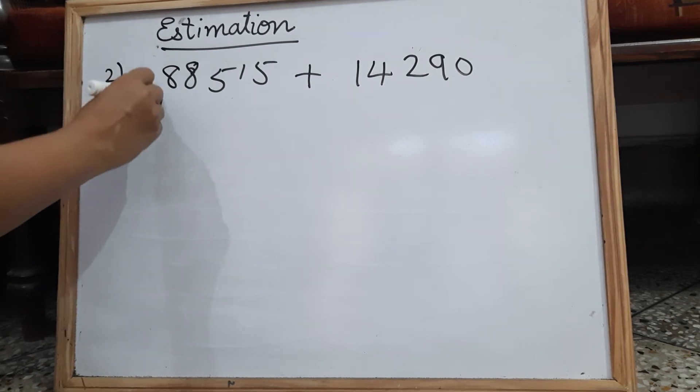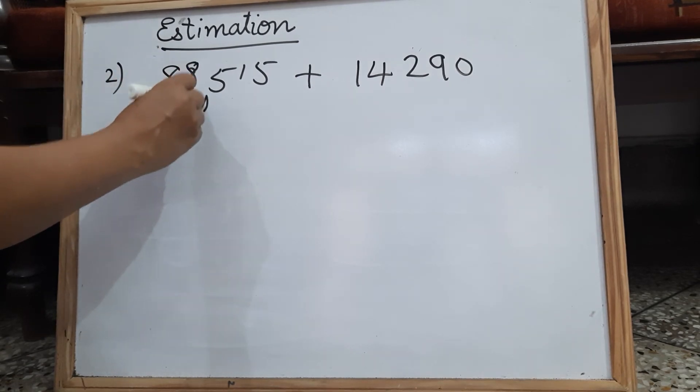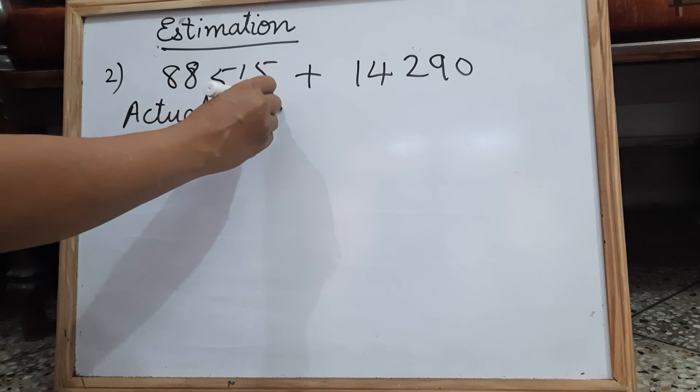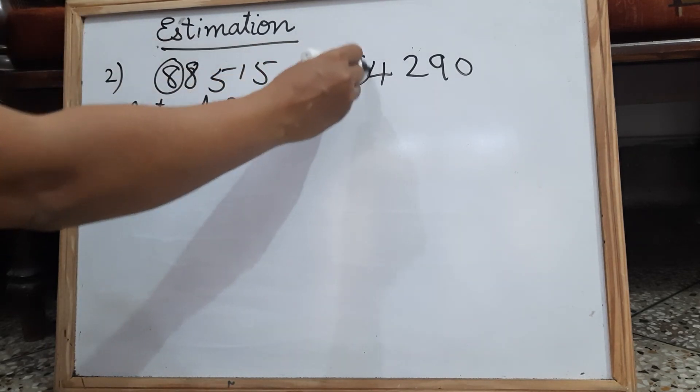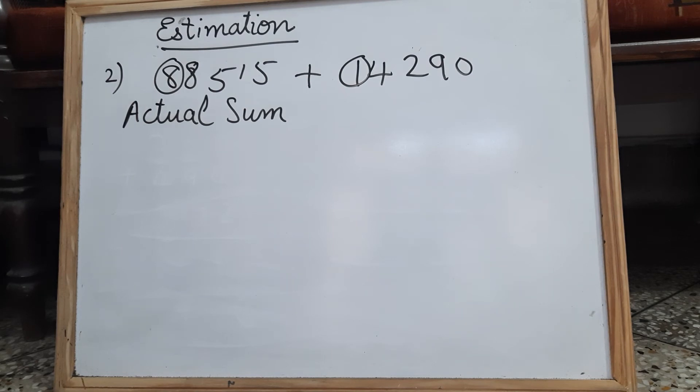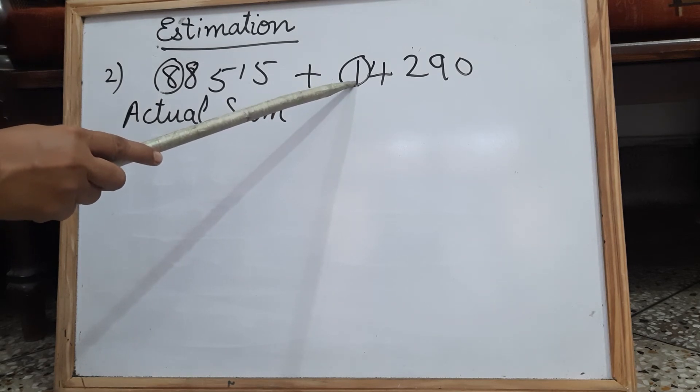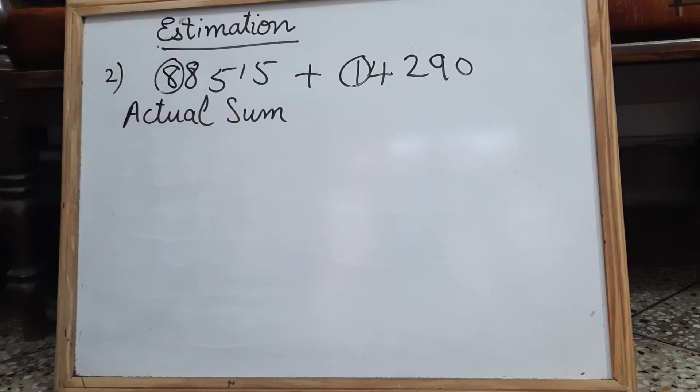First we will find the actual sum. We have to round it to the nearest 10,000. So this is the required place, okay, 10,000 place. Here 8 is in the 10,000 place, and in that number you can see digit 1 is in the 10,000 place. So this is the required place.